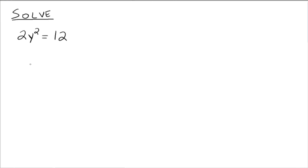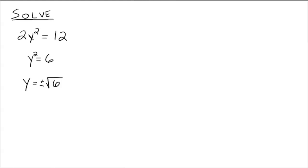Here are some examples. Solve 2y squared equals 12. It's best to isolate the y squared first, since it's the only variable — you don't have a y term running around. To isolate y squared, divide both sides by 2, and we get y squared equals 6. Now we have something squared equals a number. Take the square root of both sides: the left side gives y, and the right side gives the square root of 6. Don't forget the plus or minus out front to denote two solutions — y equals positive or negative the square root of 6. Either value plugged in for y gives a true statement.